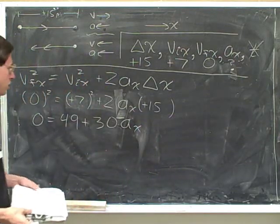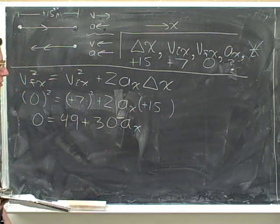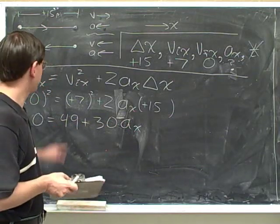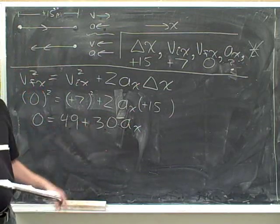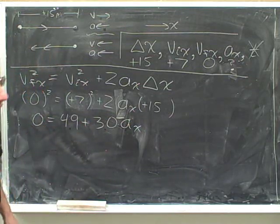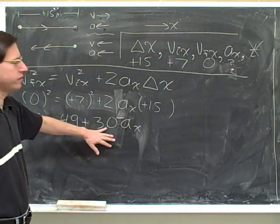Now we have to continue in our quest to isolate the acceleration. What do we need to do to get the acceleration by itself? We need to get rid of the 49 and we need to get rid of the 30. What should we get rid of first, the 49 or the 30? I hope it's clear to you that it's the 49.